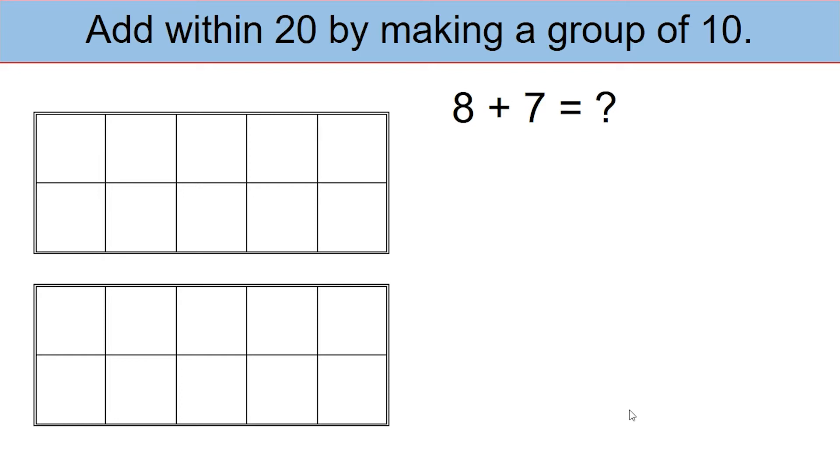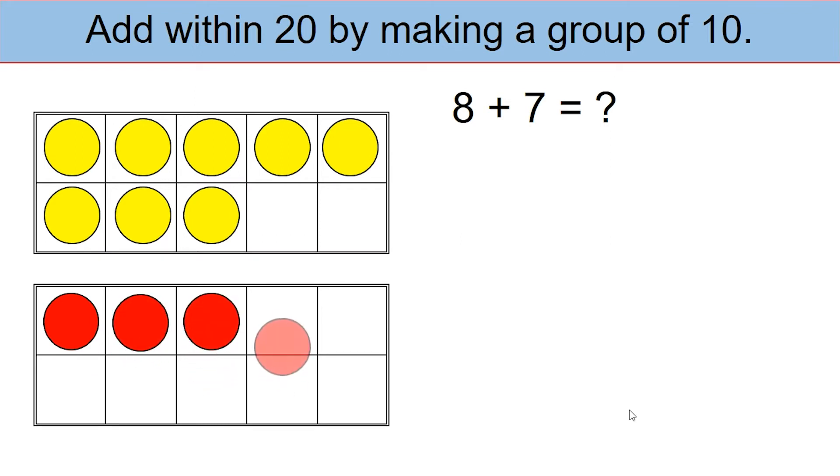On the first tens frame, place 8 of the yellow counters. On the second tens frame, place 7 red counters.